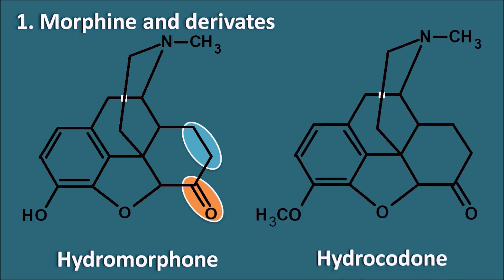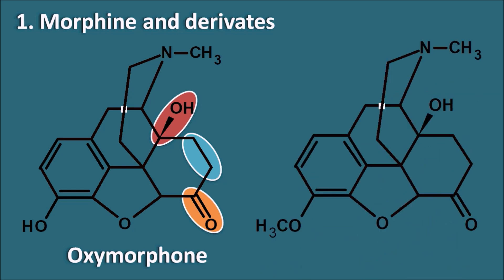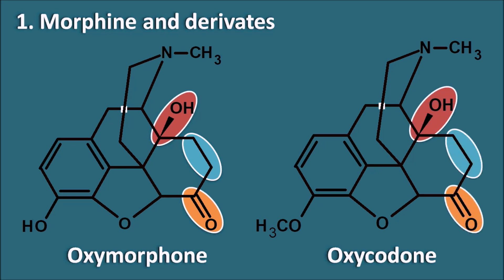Hydrocodone is an analogue of codeine where again the sixth position is a ketone and the 7,8-position is saturated. Oxymorphone is derived from morphine with an extra OH group at the 14th position (14-beta-hydroxy), a 6-keto group, and 7,8-saturation. Oxycodone is similarly derived from codeine with 14-beta-hydroxy, 6-keto, and 7,8-dihydro substitutions. These are the morphine and their analogues.